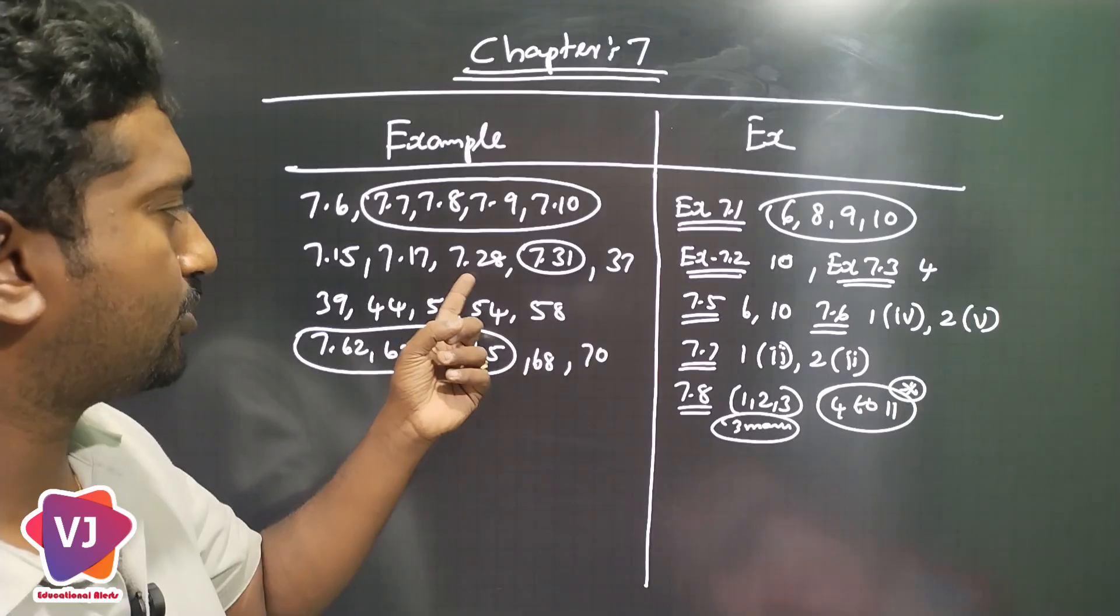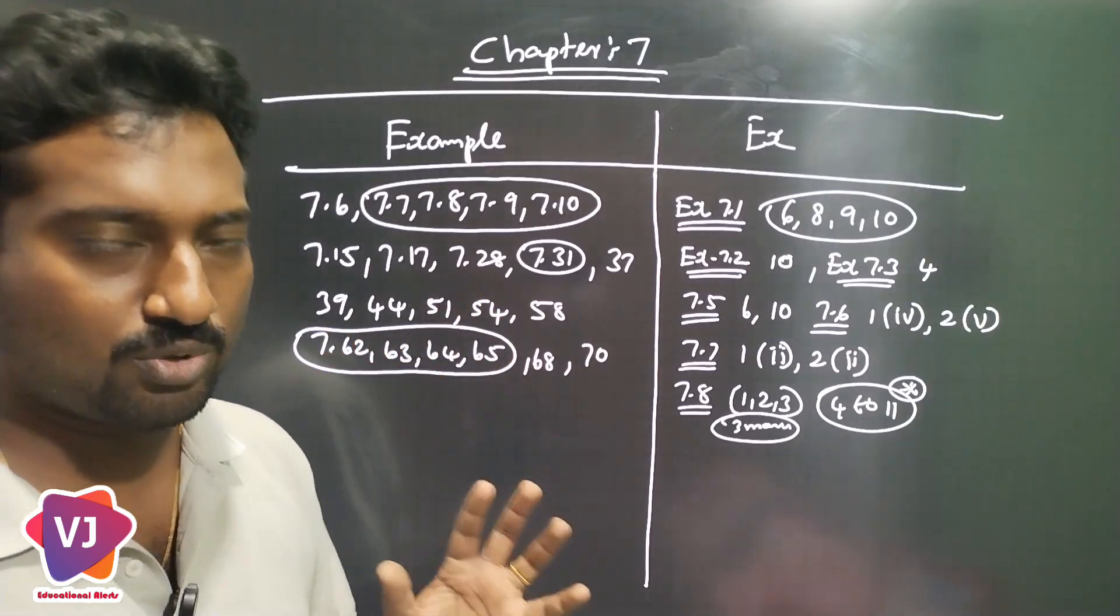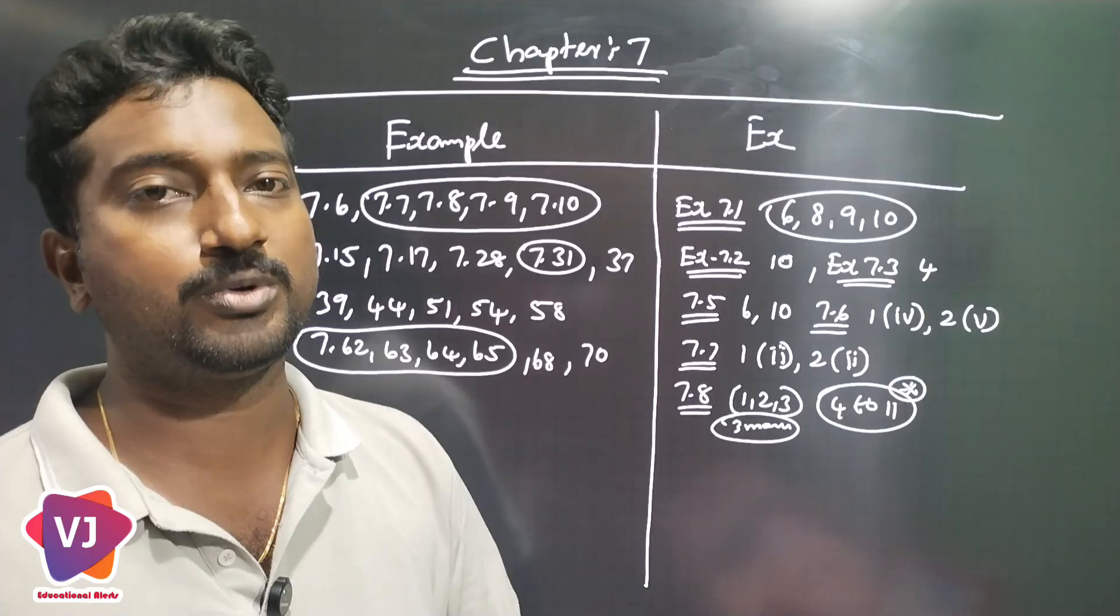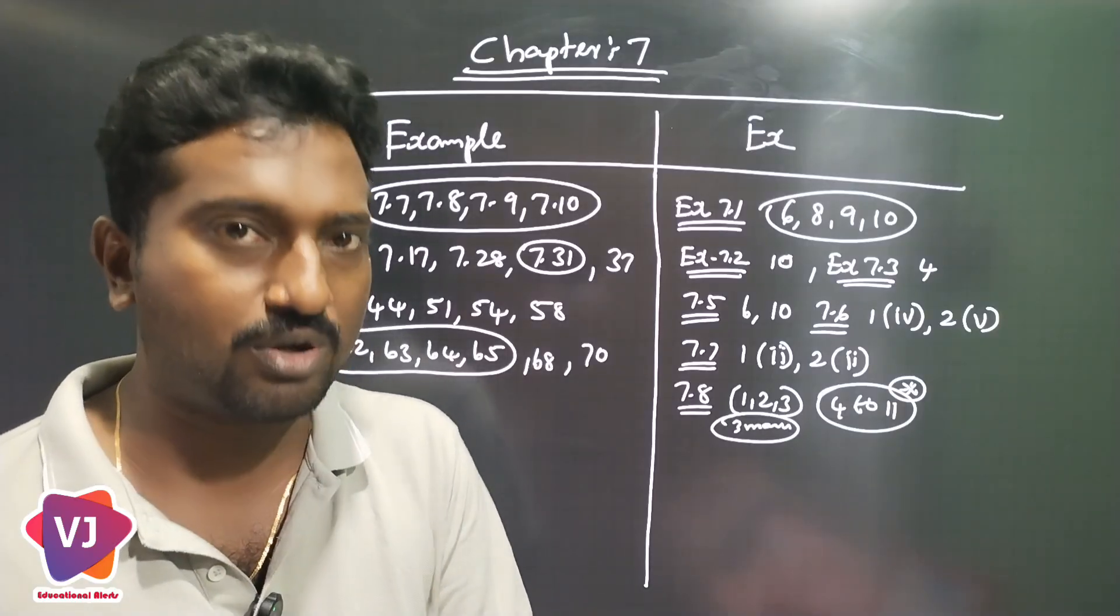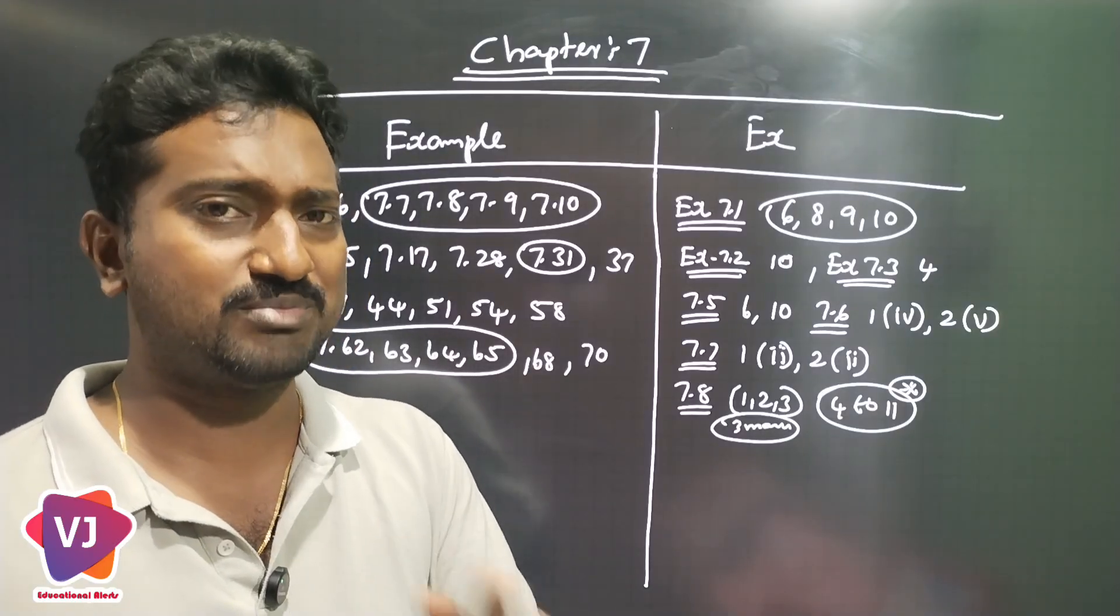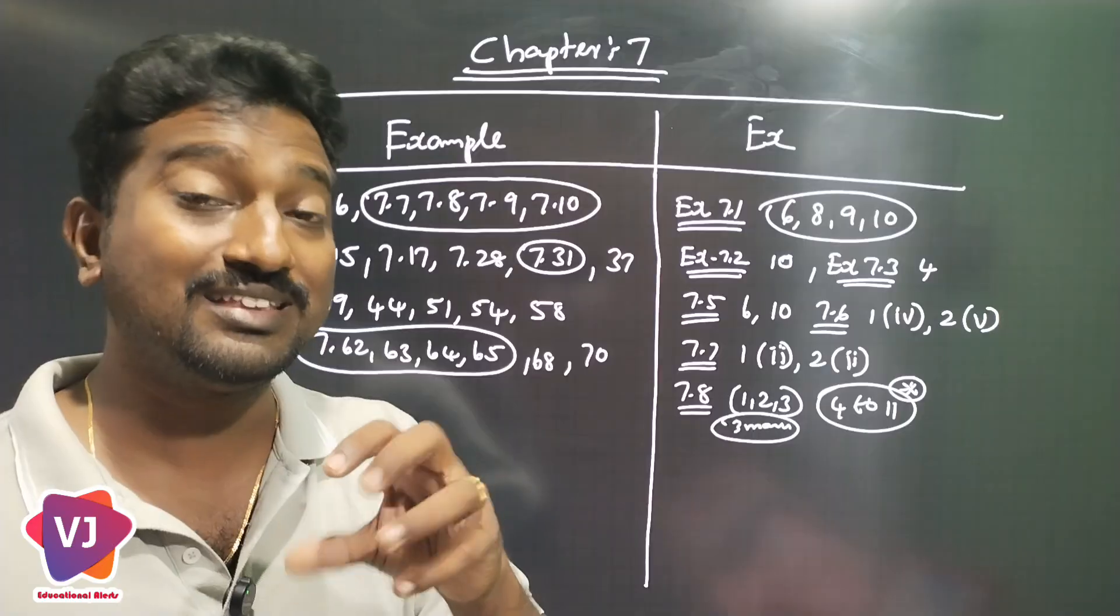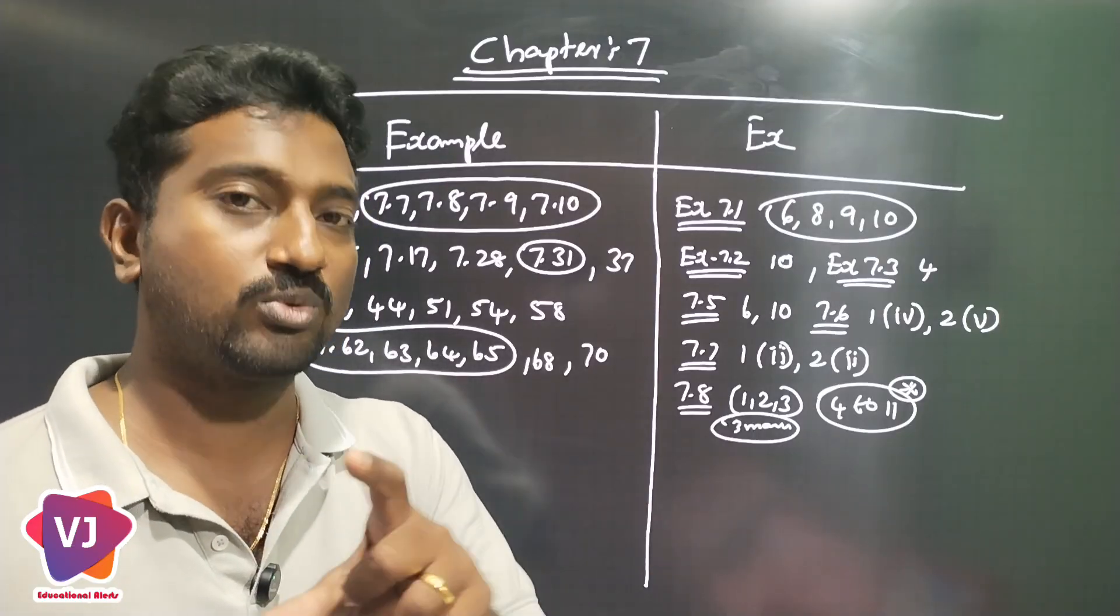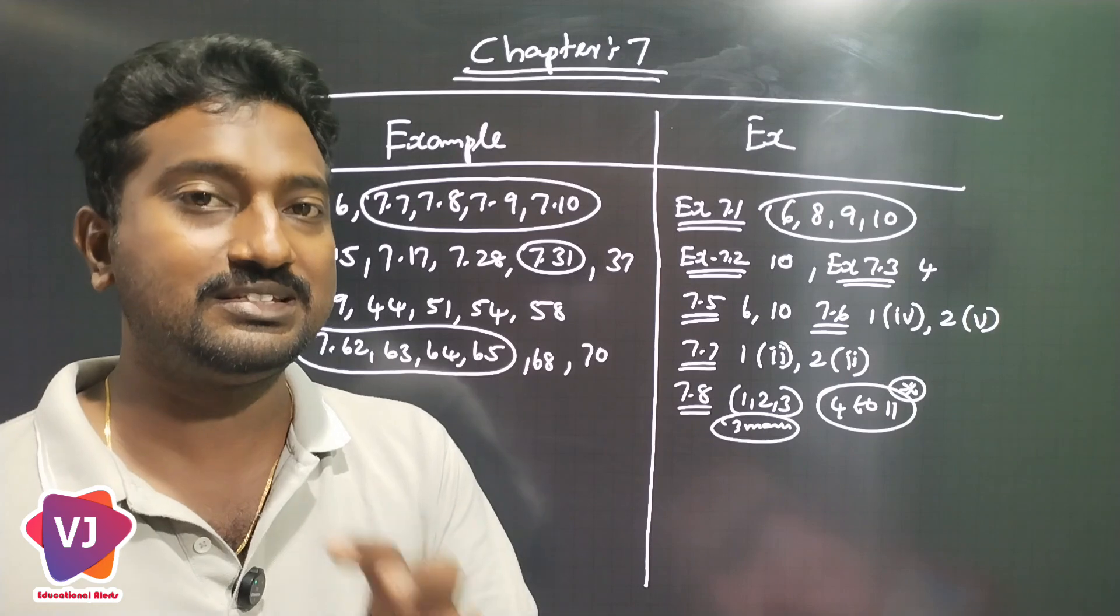15, 17, 28, 31. Question 31, you can upload a lot of easy methods in our channel. That is example 7.31, 12th Maxon. Vincent Maxon. You can teach that method in our book. You can teach a different method. That is very easy. You can understand it.